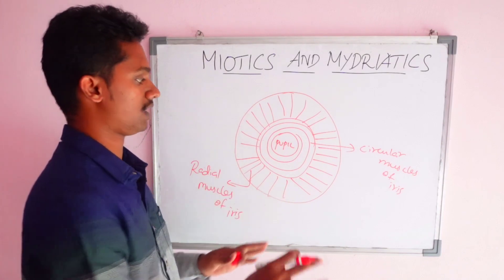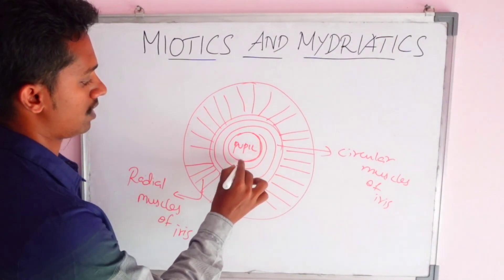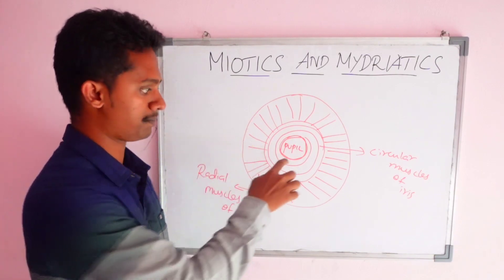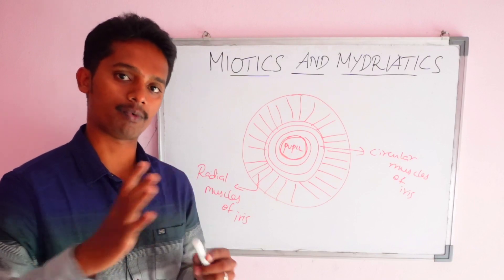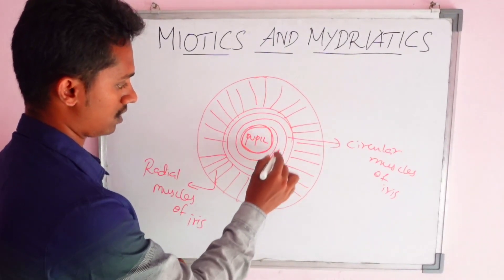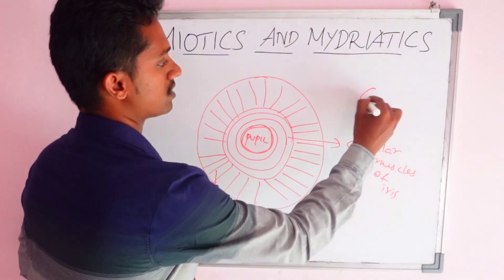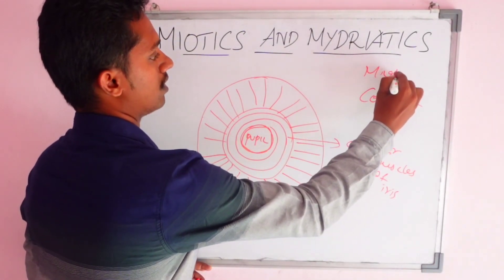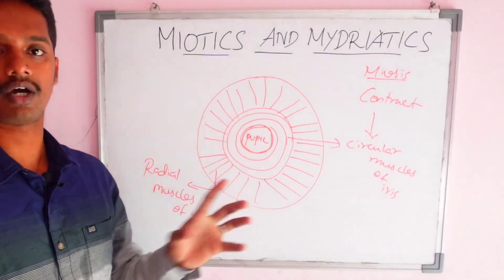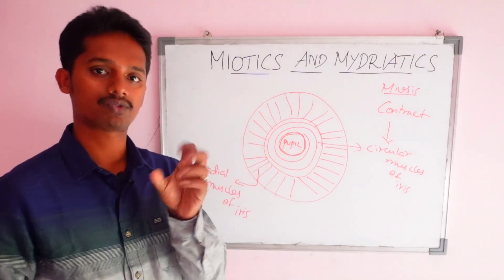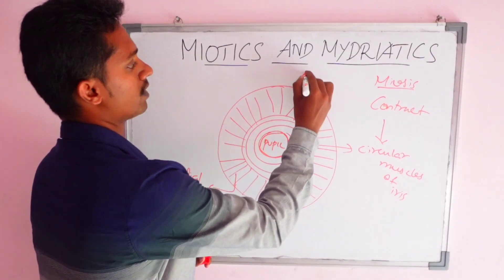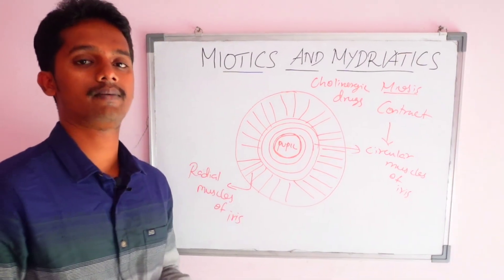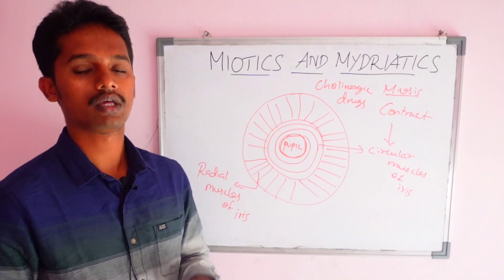When the circular muscles of the iris contract, the pupil constricts. This is meiosis. The drugs that produce meiosis are cholinergic drugs, not anti-adrenergic drugs. This is the mechanism of meiosis.